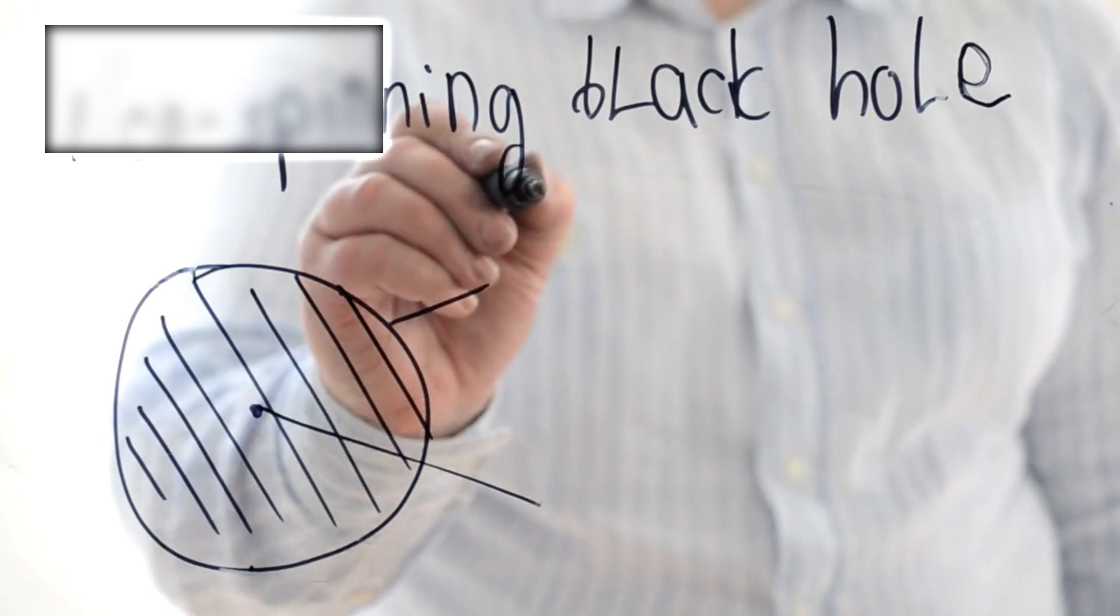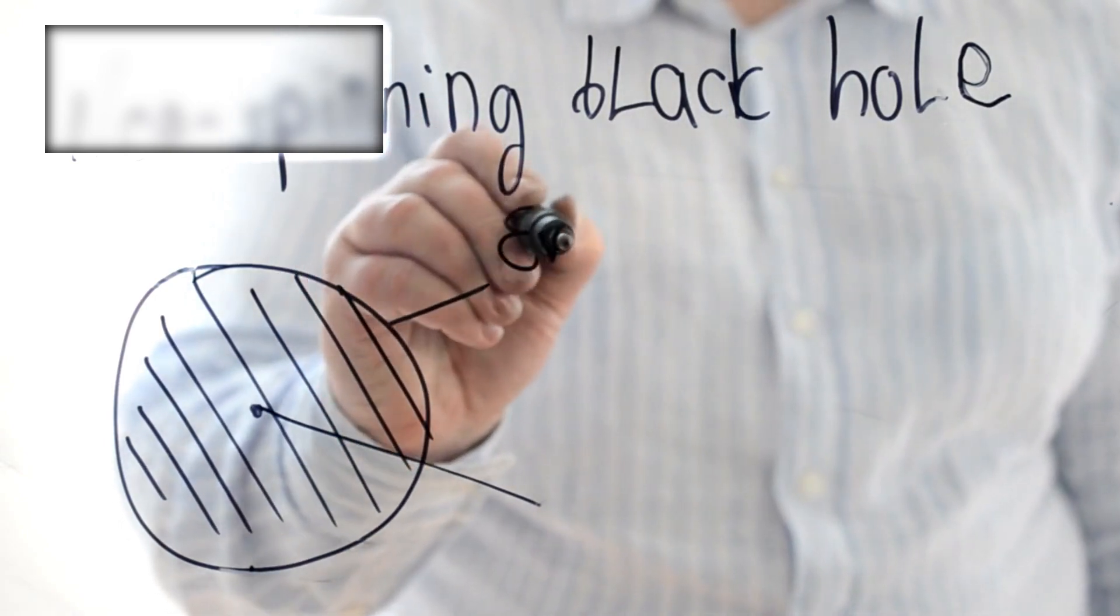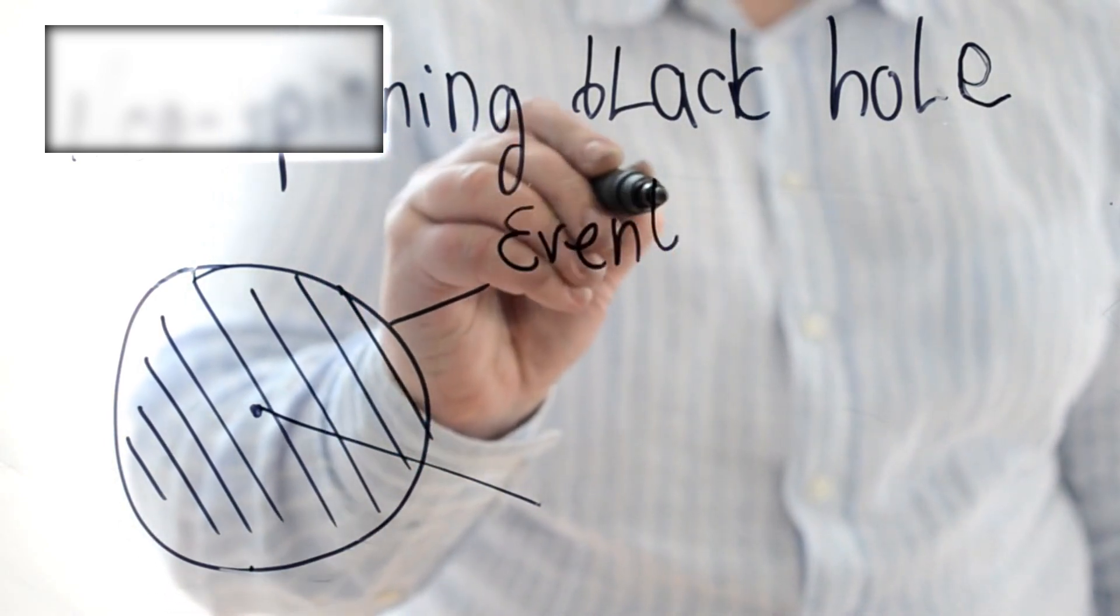Black holes are not uniform, they come in different types. Some spin rapidly, and these are described by the Kerr metric, developed by mathematician Roy Kerr. Spinning black holes possess an outer region known as the ergosphere, where spacetime itself is dragged along by the black hole's rotation, a process called frame dragging. This region offers a tantalizing theoretical opportunity, extracting energy from a spinning black hole, perhaps even fueling futuristic technologies.